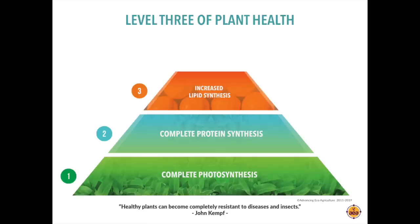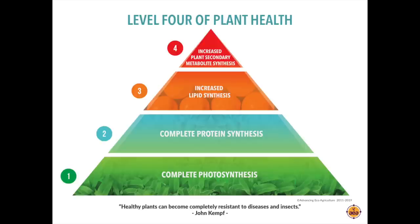The third stage is when plants develop a surplus of energy and begin storing it in the form of lipids — plant fats and oils. We see that with really good biological activity in the soil profile, it's possible to achieve increased lipid synthesis by as much as two to four times within plant structure. The fourth level of the plant health pyramid is when plants begin producing elevated levels of plant secondary metabolites — compounds such as phytoalexins, terpenoids, and sesquiterpenes.